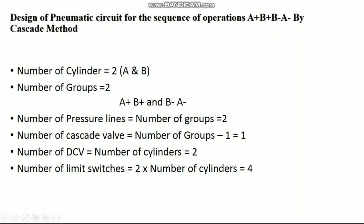Number of pressure lines equals number of groups, that is 2. Number of cascade valves equals number of groups minus 1, so 2 minus 1 equals 1. Number of direction control valves (DCV) equals number of cylinders, so 2. Number of limit switches is 2 for each cylinder, so 2 into 2 equals 4.